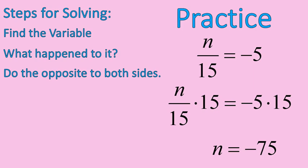Now I'm going to check my work in the space I have left over here. So I'm going to put the number negative 75 into this equation, negative 75 divided by 15, and see if I get negative 5 for an answer. 75 divided by 15 is 5, and negative divided by a positive gives me a negative. So that's correct. Negative 5 equals negative 5. Therefore, my solution is n equals negative 75.